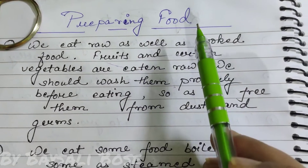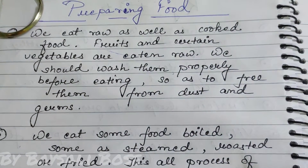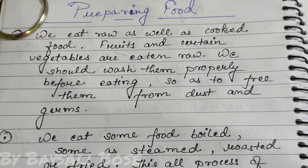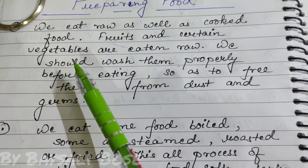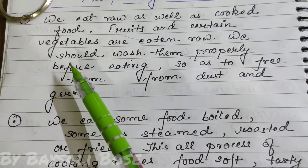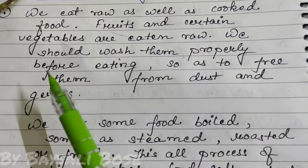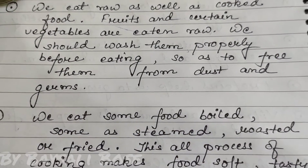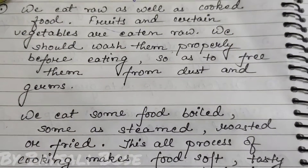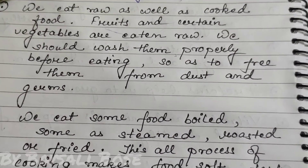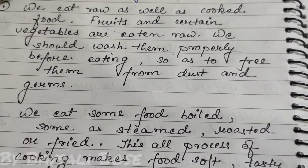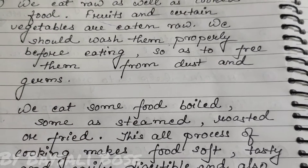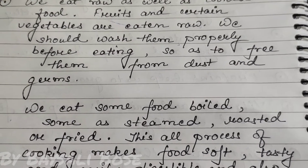Our next topic is preparing food. We eat food either raw or cooked. Fruits and certain vegetables are eaten raw. We should wash them properly before eating, so as to free them from dust and germs.